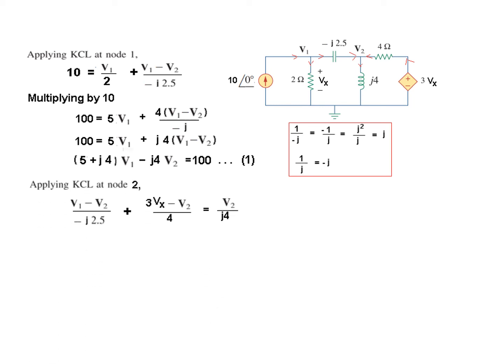Similarly we'll write KCL at node 2. So this is entering V1 minus V2 divided by minus j 2.5, this current is also entering so 3Vx minus V2 divided by 4 and this is leaving so V2 divided by j4 and here also we'll solve, I'm multiplying this by 20 and so it will be 8 V1 V2 divided by minus j. This will be 5 times and this will also be 5 times and we'll have a positive j here, there was a negative j.